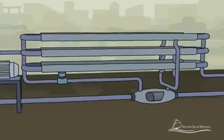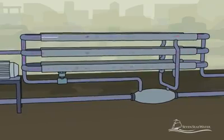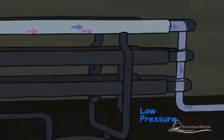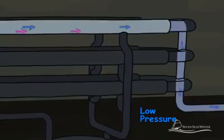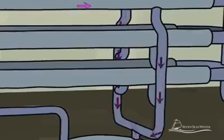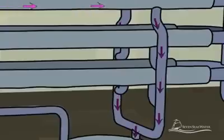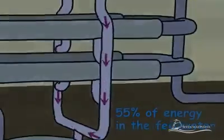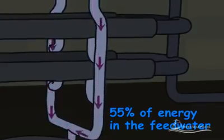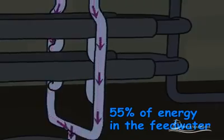As the pressurized seawater enters the pressure vessel and flows across the membrane surface, the water molecules are forced into and through the membrane envelopes, leaving the salt molecules behind. The desalted water passes through the membrane and emerges at low pressure, where it is collected in a tube and directed to one end of the pressure vessel. The concentrated salt stream that is rejected continues to pass across the membrane surface where it is collected separately, retaining about 55% of the total energy of the original seawater stream.